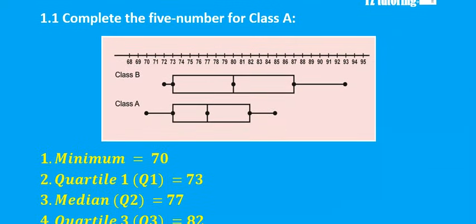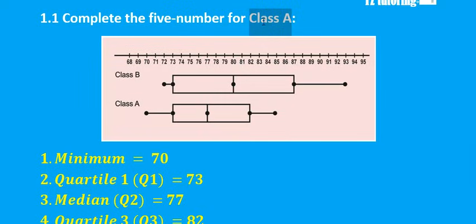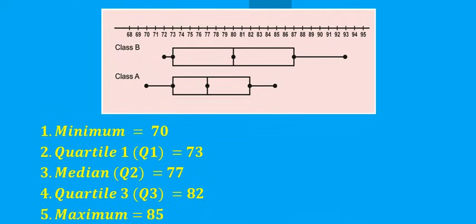For question 1.1, you are given two box-and-whisker plots for two different classes — class A and class B — and we need to complete the five-number summary for class A. If you remember from part one, you were given the five numbers and had to sketch the box-and-whisker plot. Here, you are actually given the box-and-whisker plot and have to get the five-number summary from it. So you basically do the opposite of what you did in part one.